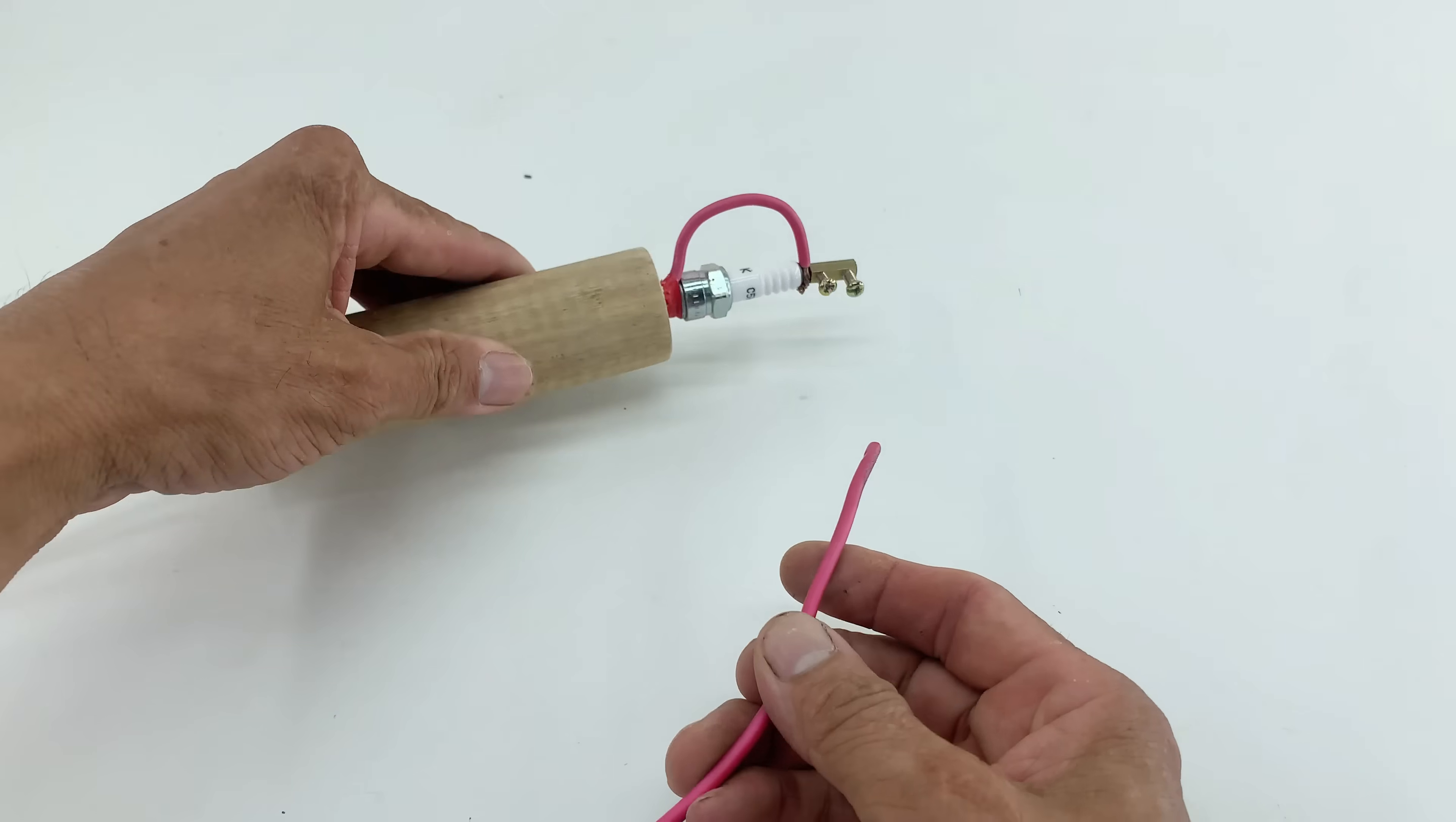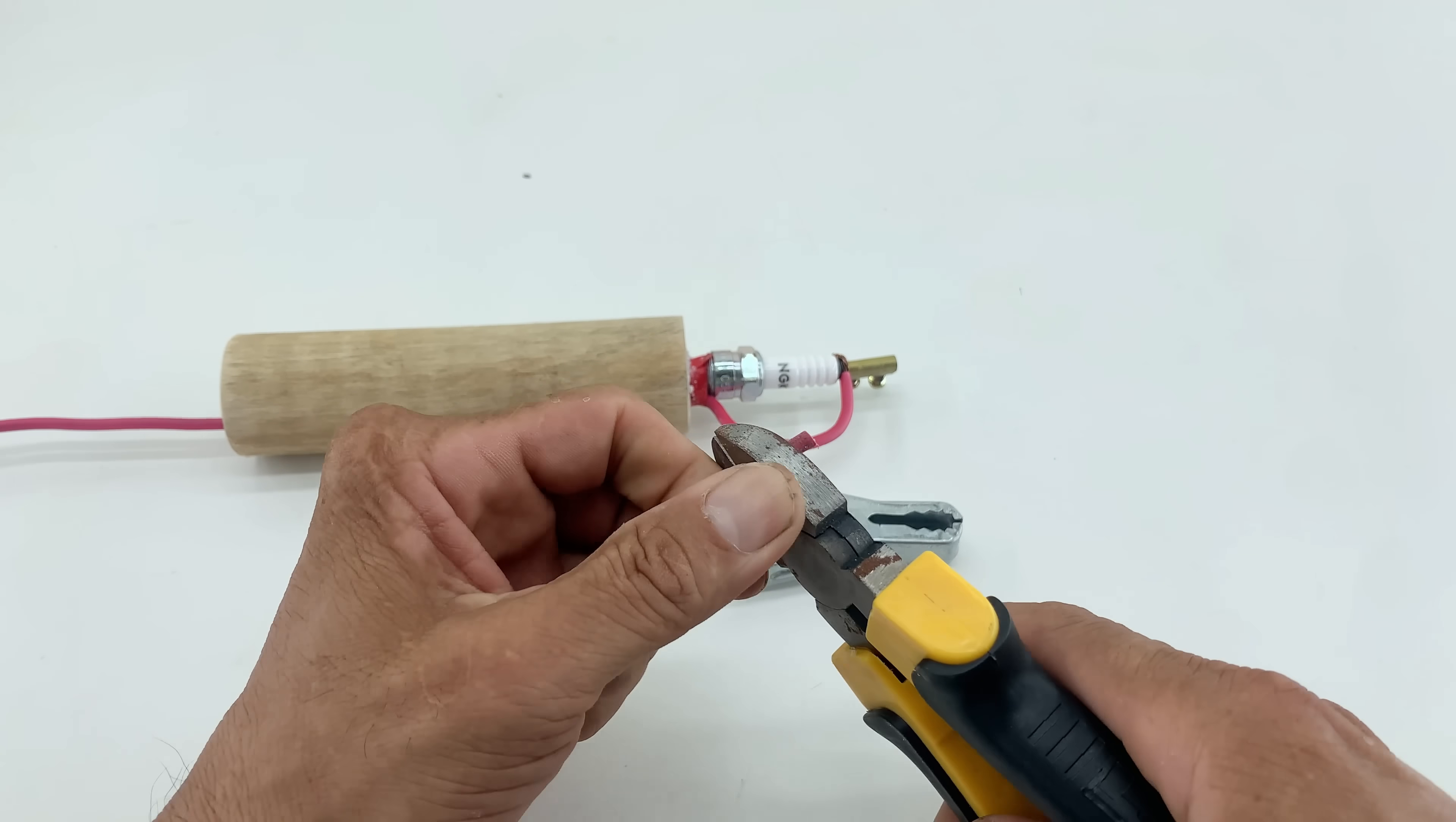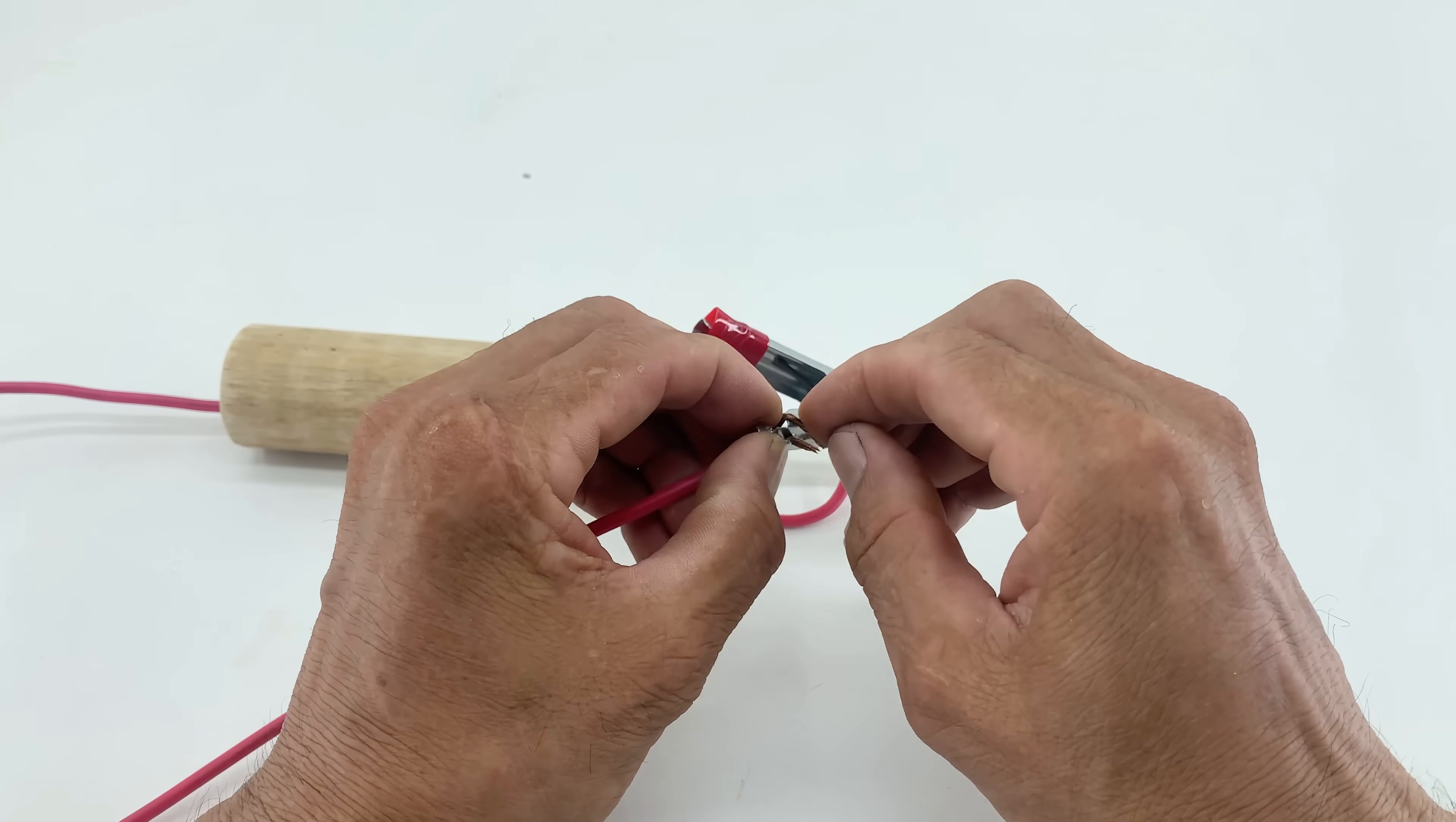Now, to complete our tool's wiring. A section of red electrical wire is meticulously stripped of its insulation and then twisted to form a secure connection point. I attach one end to a small alligator clip, crimping it tightly with pliers for a secure connection.